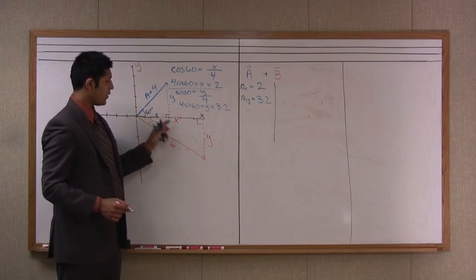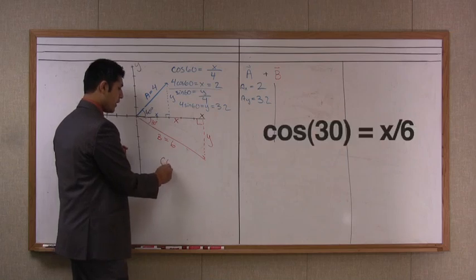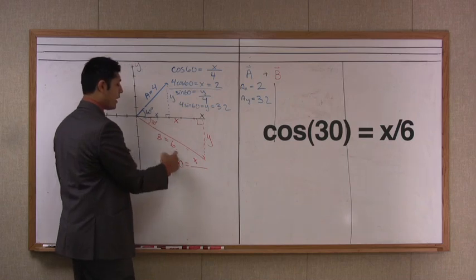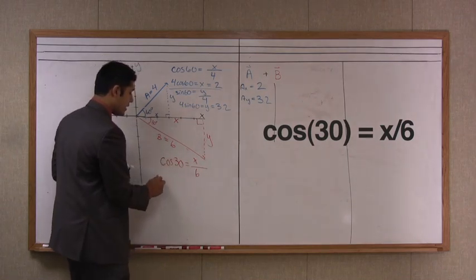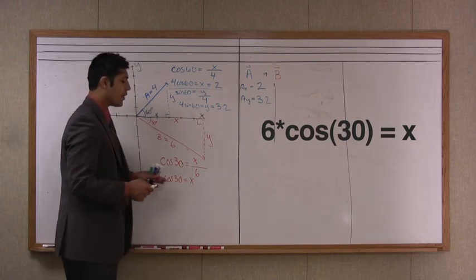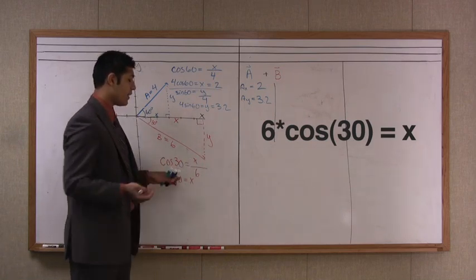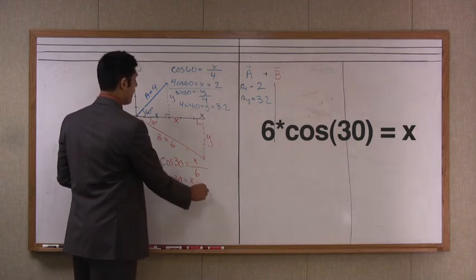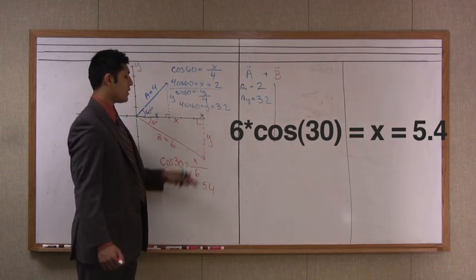So to get x first, we would say that the cosine of 30 is equal to x all over the hypotenuse 6. And again, doing the algebraic rearrangement, I would say 6 times the cosine of 30 is equal to x. And the cosine of 30 is equal to root 3 over 2 or about 0.87. So 6 times that value is about 5.4. And so the x component is 5.4.